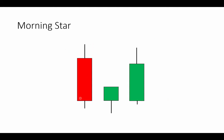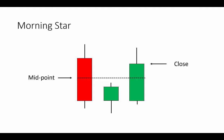The first bar is a down close — also a large body bar when compared to the average in the look-back period. The second bar is a small body bar, so we see some hesitance with this small body bar. The final bar in the constellation is a large body up close. Important here is that the close is above the midpoint of the initial bar — that is the main requirement for this pattern.